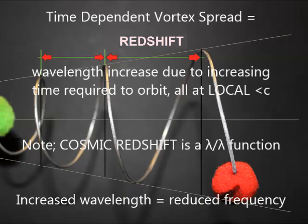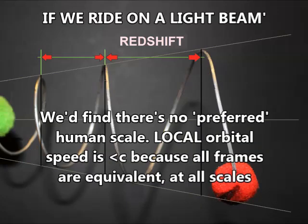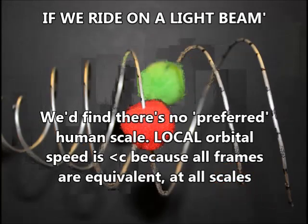Here we see the growth of wavelength lambda over time from the increasing orbital path length. Cosmic redshift is a wavelength function so inverse to frequency. If we ride on a light beam as Einstein imagined, we'd find there is no preferred human scale. Local orbit speed is c because all frames are equivalent at all scales locally.